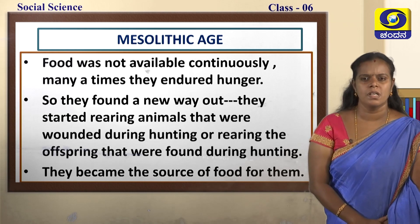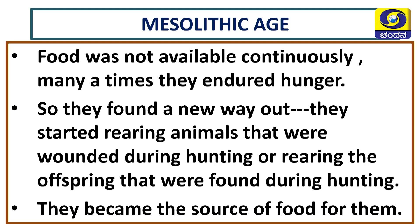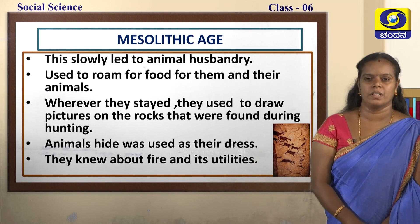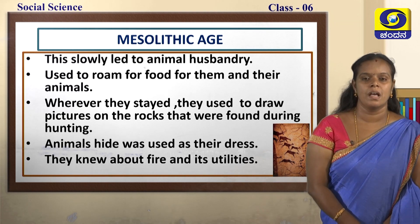They were also gathering nuts. Food was not available continuously, and many times they endured hunger. So they found a new way — they started rearing animals that were wounded during hunting, or rearing the offspring found during hunting. They would bring wounded animals home and start rearing them. If the animal died, they would bring its offspring — the babies or young ones of animals. This became a source of food for them.